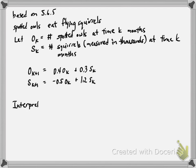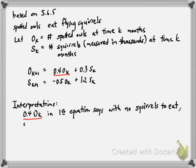Let's first give some interpretations of what these linear relationships are saying. The 0.4 times OK in the first equation says that if there were no squirrels, so if S K was 0, then only 40% of the owls would survive to the next month.